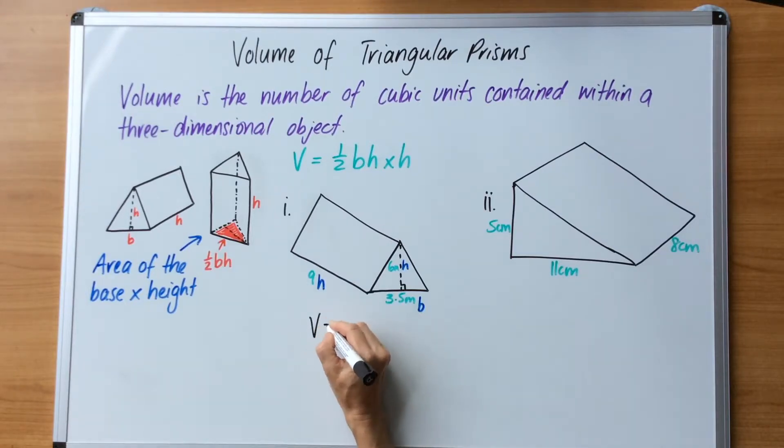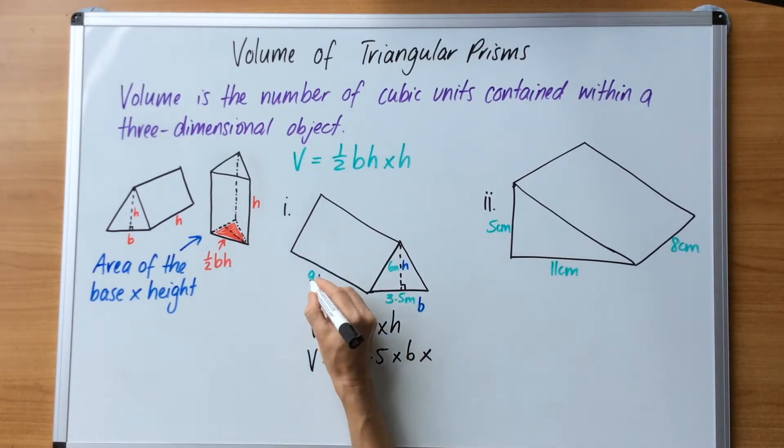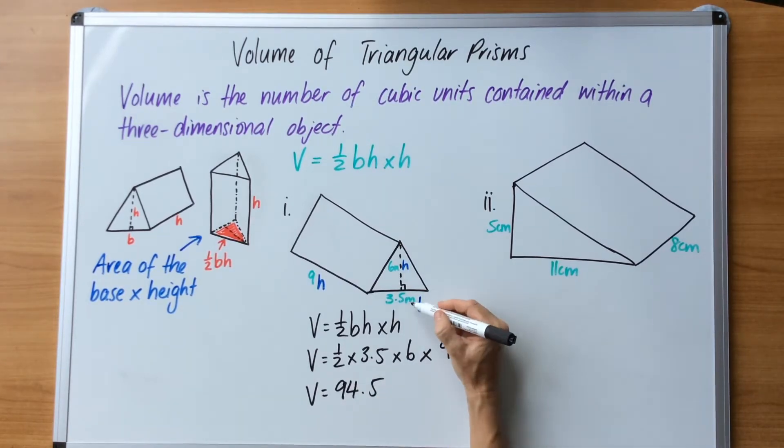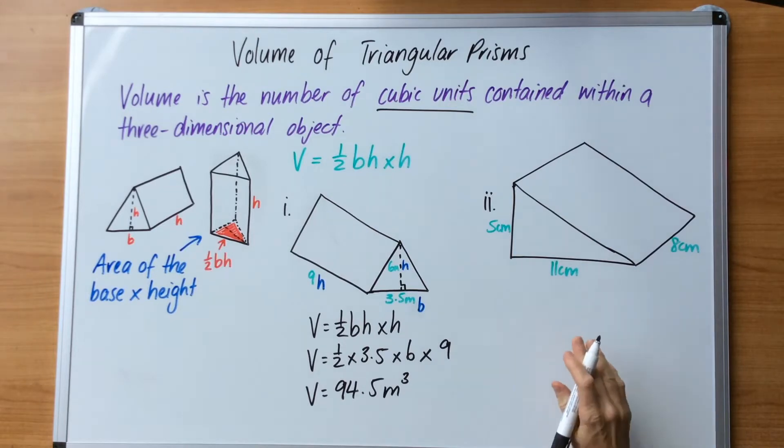Now that I've established that, I'm going to write the rule: volume equals half base height times height. My second line is substitution - that means replacing these letters for the values given to us. So half times 3.5 (the base) times 6 (the height) and then times 9 for the height of the prism. In your calculator, use the fraction button: 2 times 3.5 times 6 times 9 equals, and you will get 94.5 cubic meters.